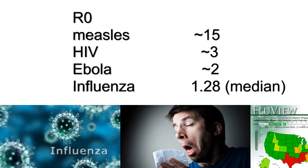The R sub-zero is generally fixed for a given strain of a given disease. R sub-zeros for measles are around 15, for HIV around 3, and for Ebola around 2.